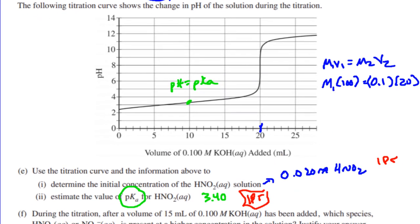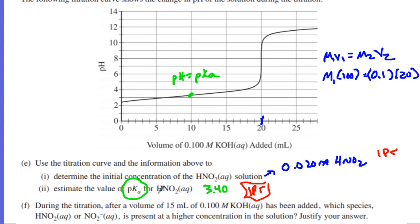The last part of the problem, Part F, says during the titration after about 15 milliliters—right here—what species is in excess? Before the titration, the HNO2 is going to be in excess. After that halfway to the equivalence point, the NO2- conjugate base is going to be in excess. We know because the pH is greater than the pKa, the conjugate base or NO2- is going to be at a greater amount. That is worth one point for indicating NO2- as well as the justification.